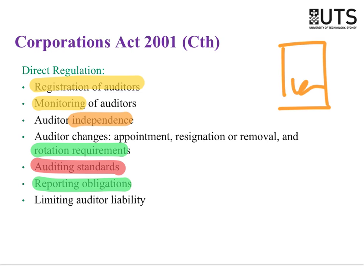The auditor must produce an audit report at the end of the audit — that makes it an attestation service, because there's a written report at the end. Under the Corporations Act there are also things that limit the auditor's liability. The Corporations Act says that audit firms can be companies — the Big Four are actually private incorporated companies. The reason for that is the advantage of limited liability. So when we say 'audit partner', it's not a partner in the technical sense of a partnership — they're actually companies.